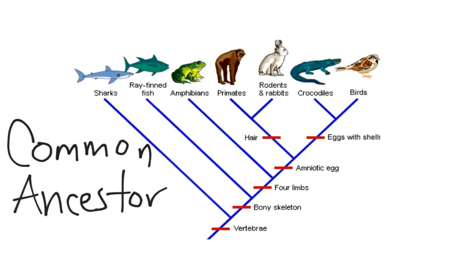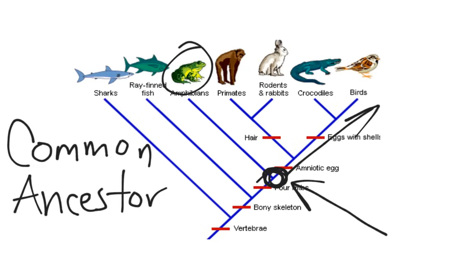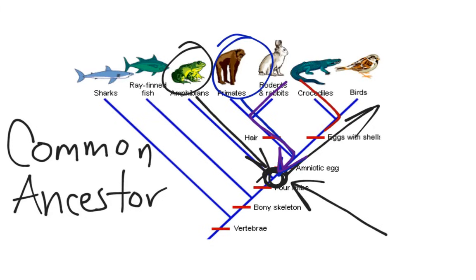If we look at any particular point — for example, right here where we have these connections — this point represents the common ancestor of all organisms after this point. So this highlighted point is going to represent the common ancestor of amphibians, of primates, of rodents, of crocodiles, and of birds, because we can trace each of them to this point.